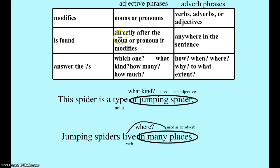Adjective phrases are a little easier to find because if you find a noun directly after a prepositional phrase, that's probably what's describing it. We can also use these questions — which one, what kind, how many, how much — to help us recognize them.